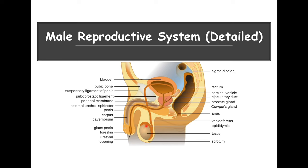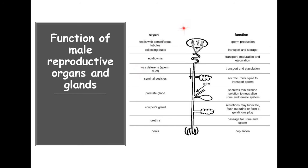Once again, here are the testes and epididymis — the sperm production and maturation centers. Once the sperm is produced it travels through the vas deferens until it meets up with the fluids from the seminal vesicle. Here's the prostate and the Cowper's gland — all of these protect and help aid the sperm as it travels through. This is a very important table and I would definitely learn it because it summarizes everything.